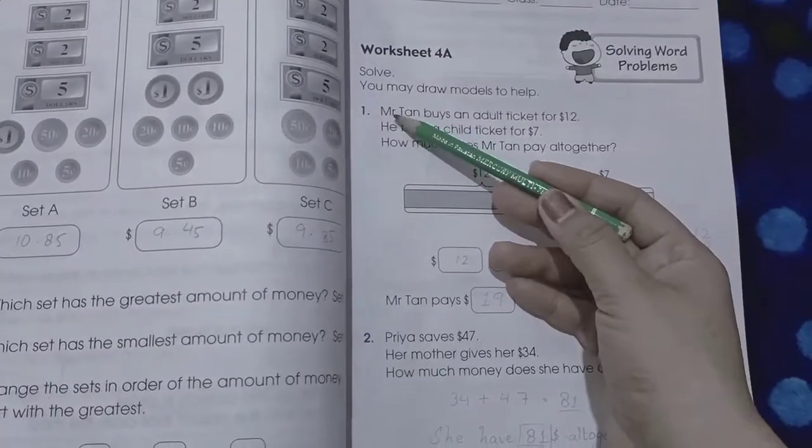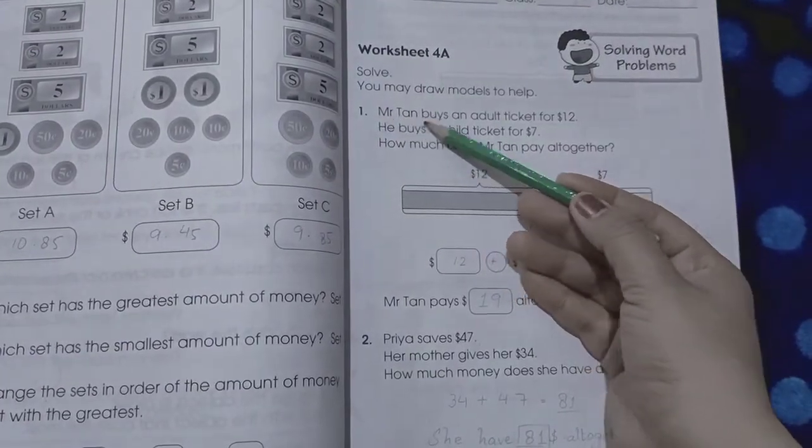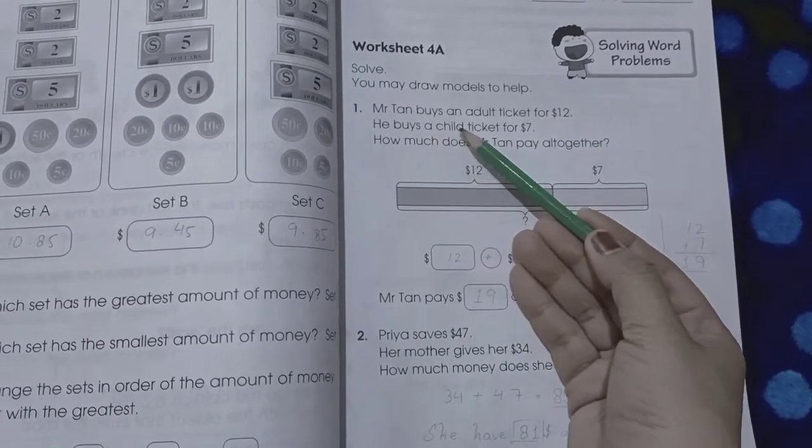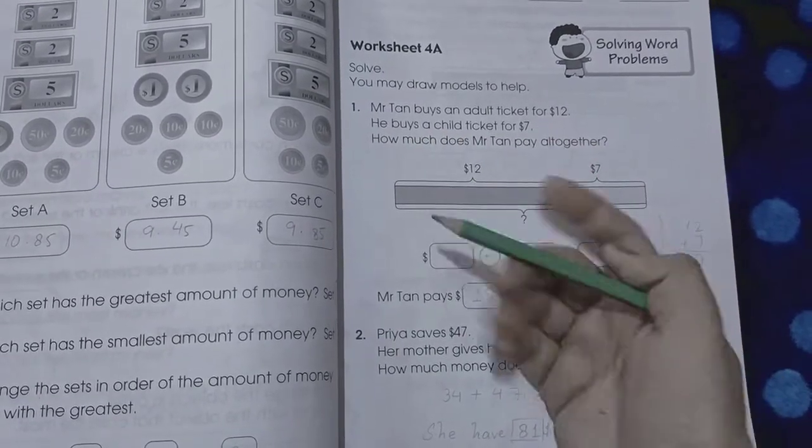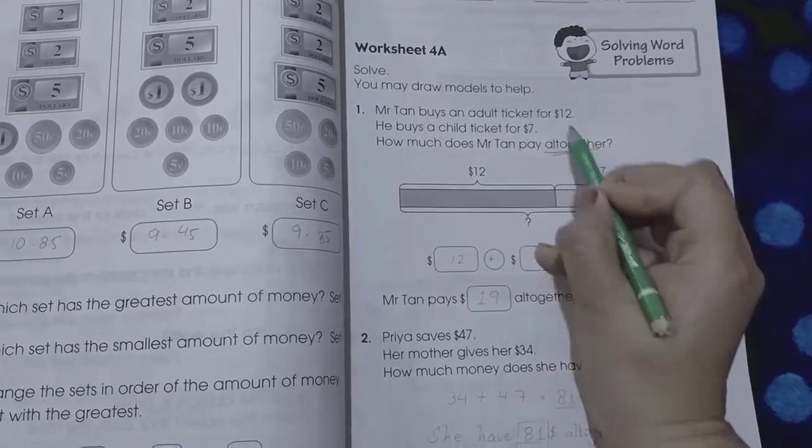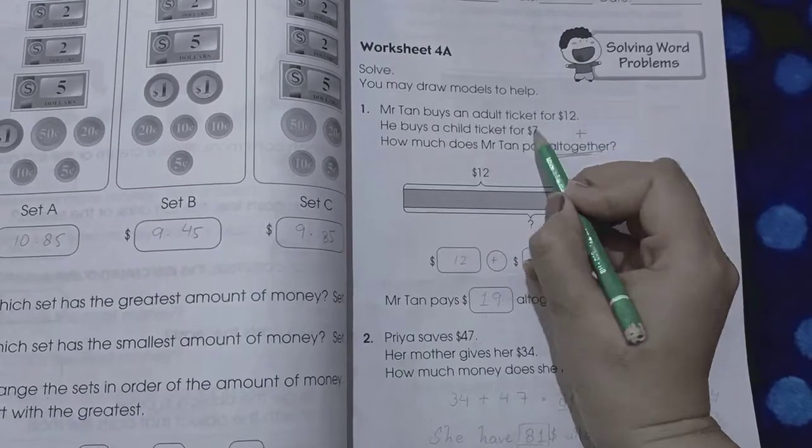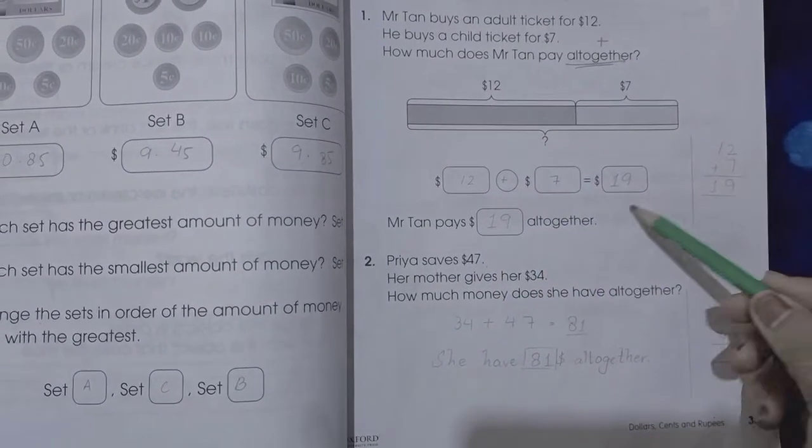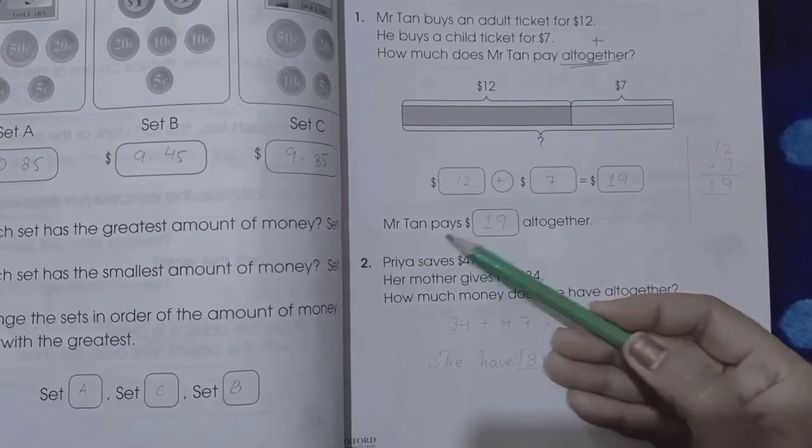Number one: Mr. Tan buys an adult ticket for rupees 12. He buys a child ticket for rupees 7. How much does Mr. Tan pay altogether? Altogether means we have to add both numbers. We simply add 12 plus 7, so 12 plus 7 is 19. Mr. Tan pays 19 dollars altogether.